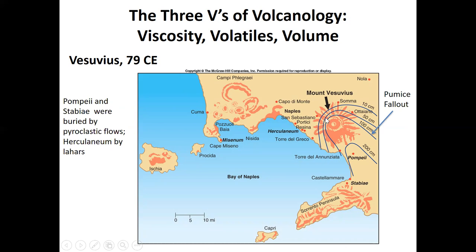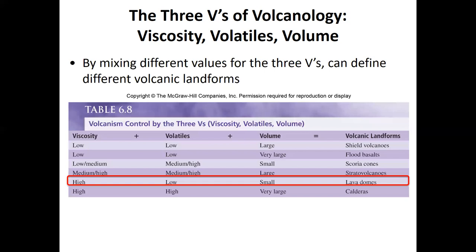A chart shows how thick pyroclastic debris was deposited as a function of distance from Vesuvius — Pompeii was buried under approximately 200 centimeters (two meters, roughly six feet) of pyroclastic material. Herculaneum to the east was not destroyed by pyroclastic ash flows but by lahars — volcanic mudflows formed when pyroclastic debris mixes with water.